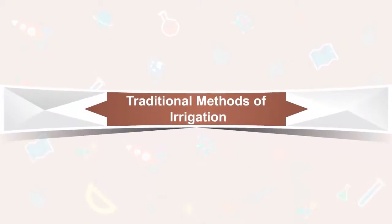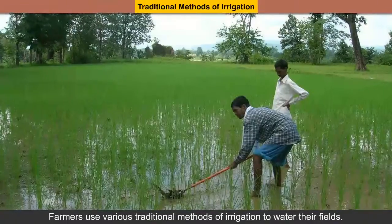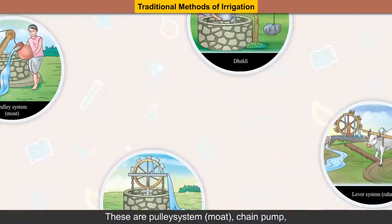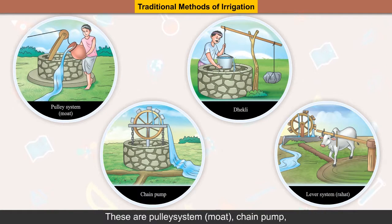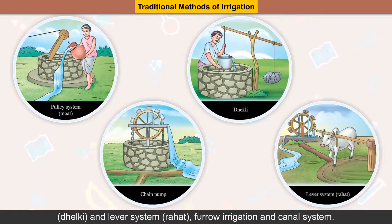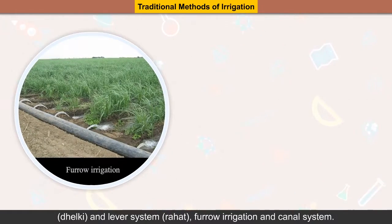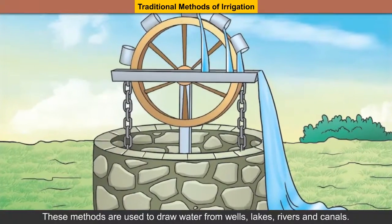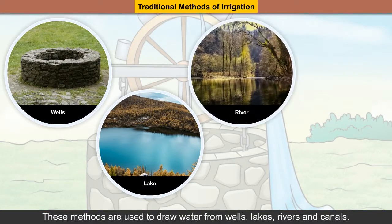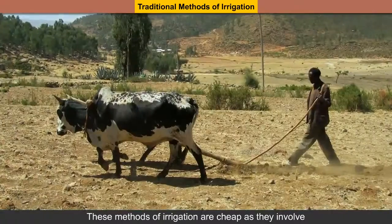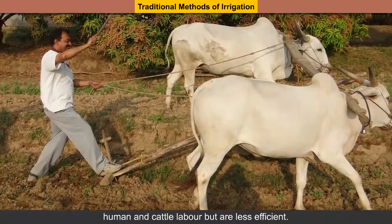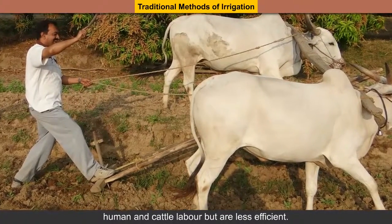Traditional methods of irrigation: Farmers use various traditional methods of irrigation to water their fields. These are pulley system or moat, chain pump, dhelki, lever system (rahat), furrow irrigation, and canal system. These methods are used to draw water from wells, lakes, rivers and canals. These methods of irrigation are cheap as they involve human and cattle labor, but are less efficient.